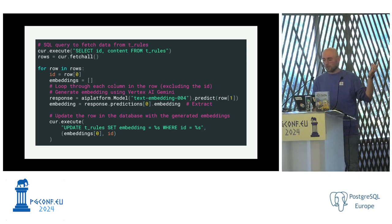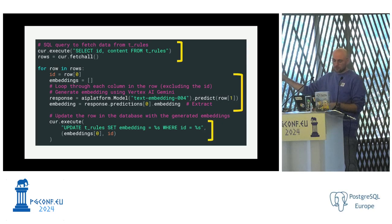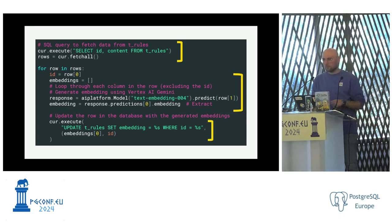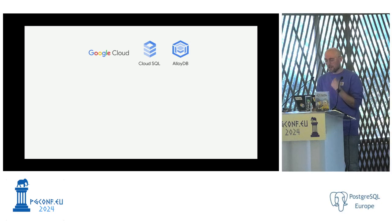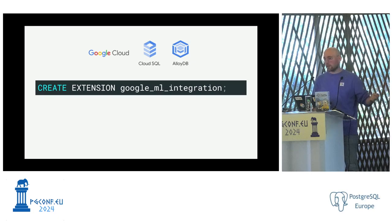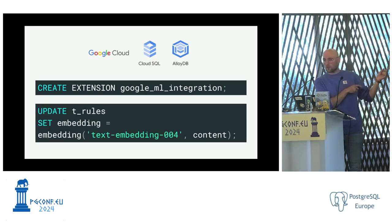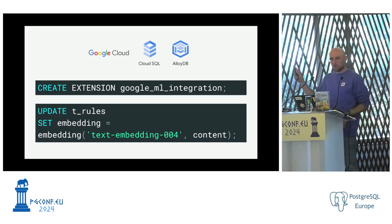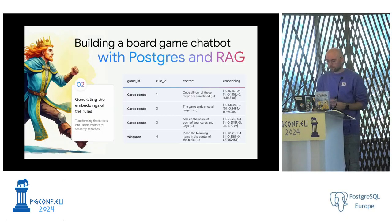So now we select all the rules from the rules table, call the embedding model sending each rule, and update the table with the embedding. If you're using Google Cloud technology like AlloyDB, there's a Google ML integration function called 'embedding' where you just provide the model, the content, and it returns the vector directly — no Python scripting needed. Step two done: we now have a table with all games, all rules, and for each rule an embedding.